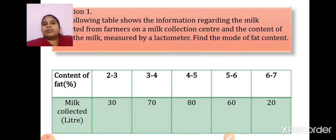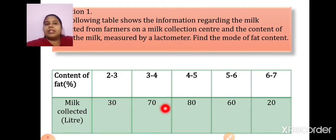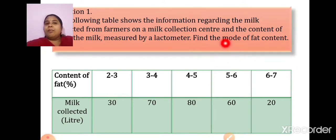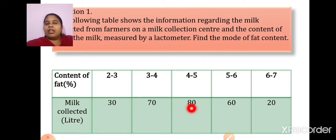Now, see how mean, median, and mode are used in our day-to-day life. The question gives content of fat in the form of class intervals. Milk collected in liters is 30, 70, 80, and so on. The question asks us to find the mode of the fat content. Which is the number having maximum frequency here? 80.